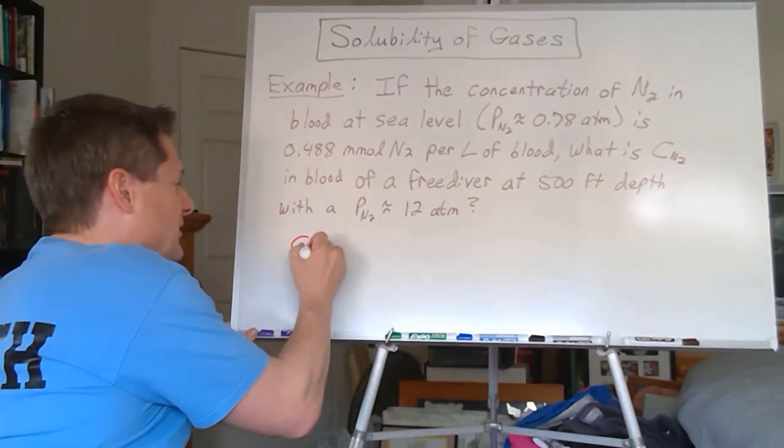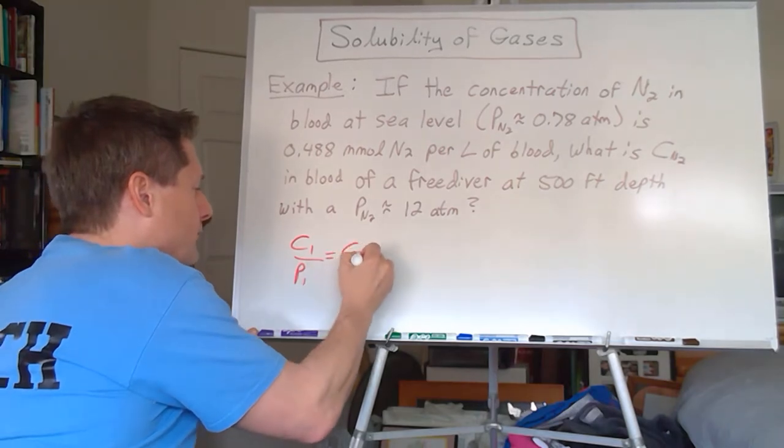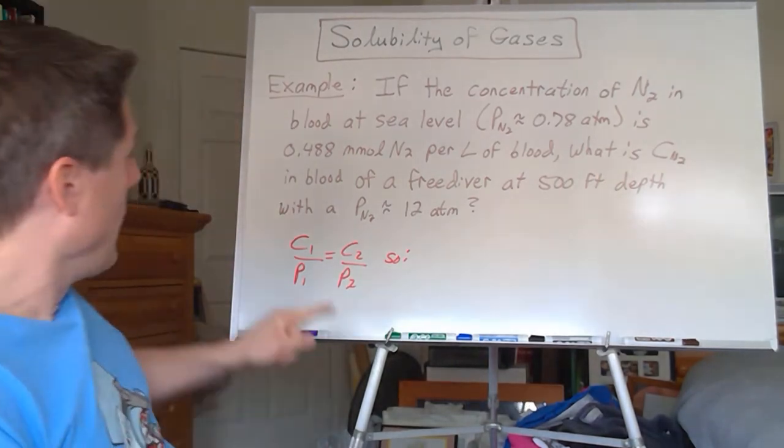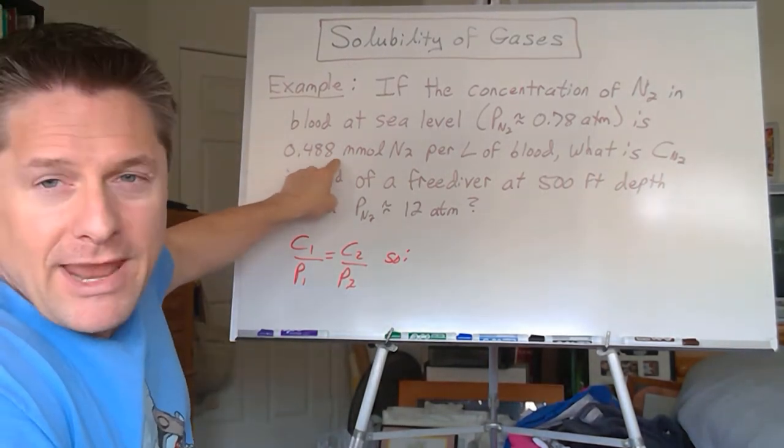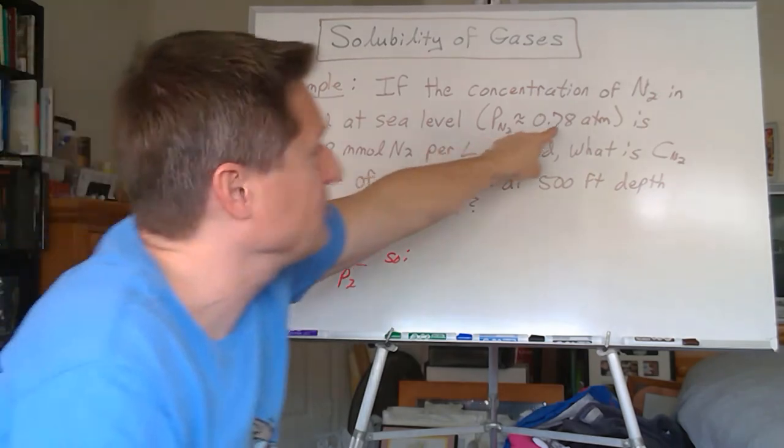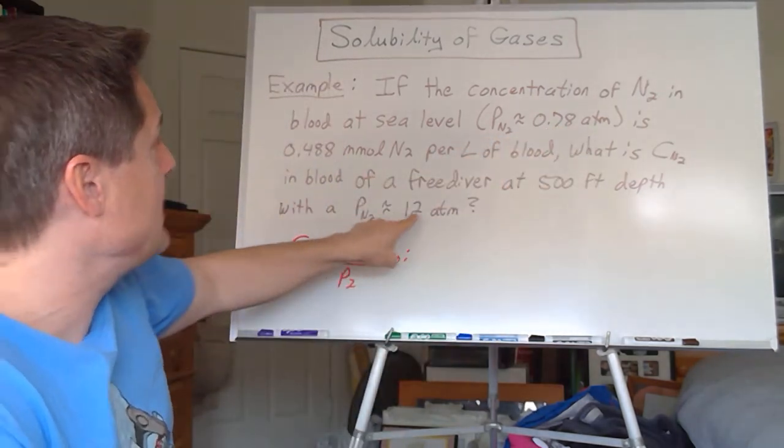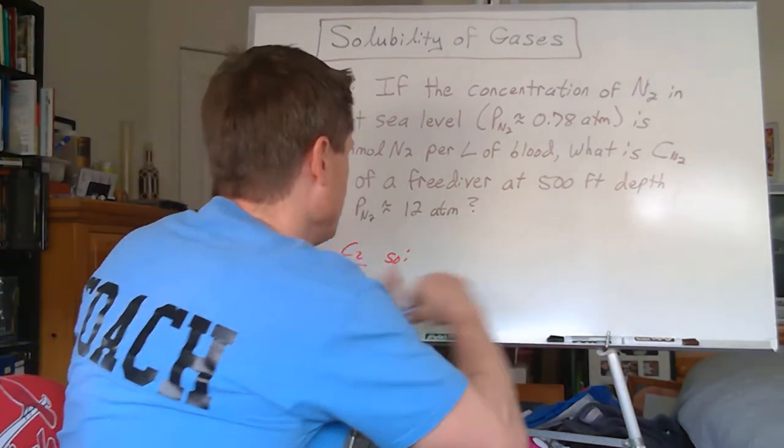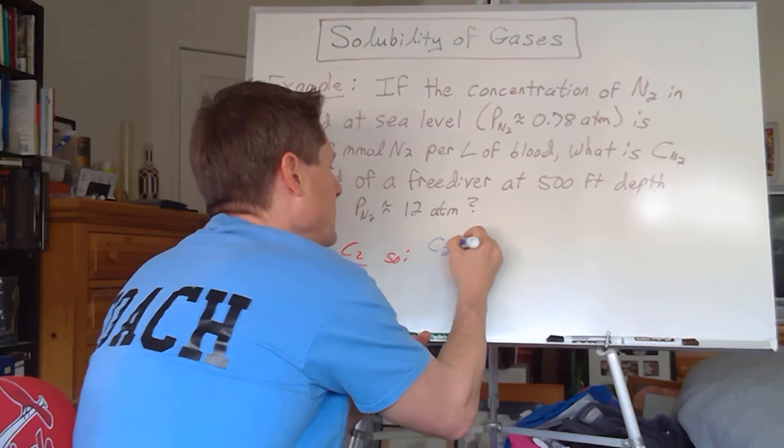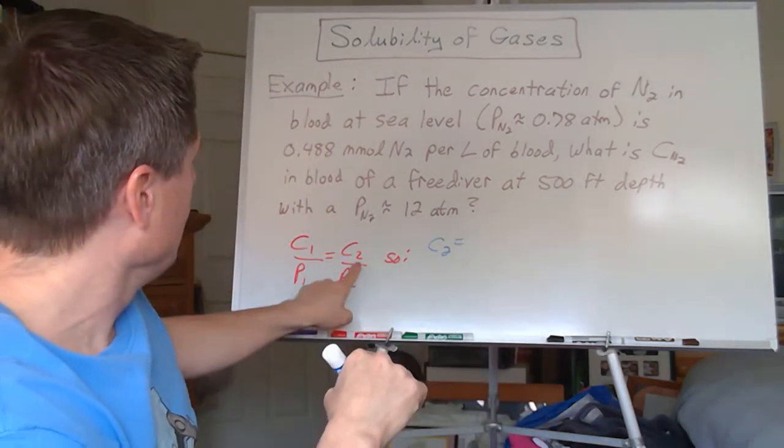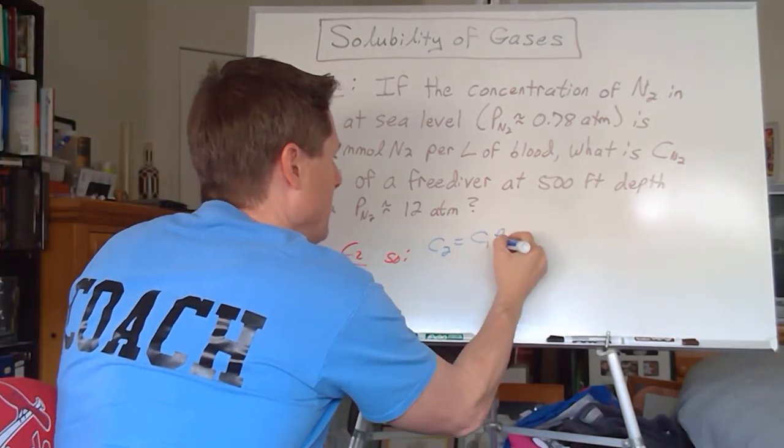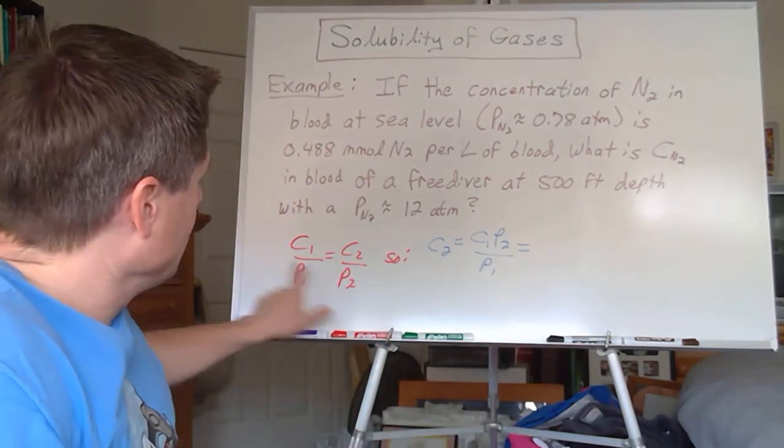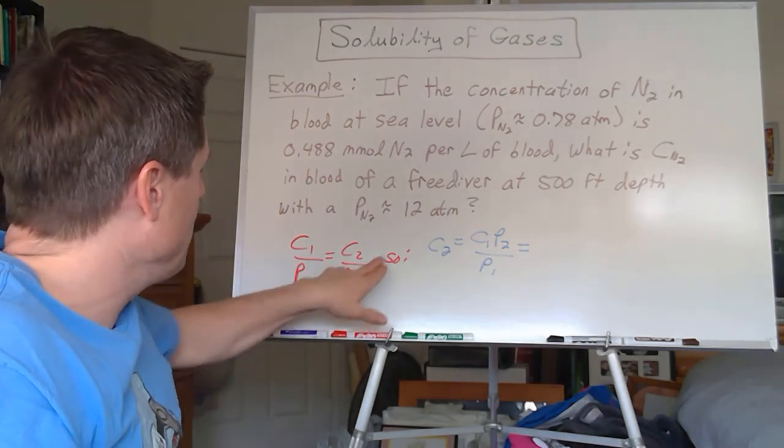Well, we know under changing conditions, C1 over P1 is C2 over P2, correct? Well, we know C1, that's 0.488 millimoles nitrogen per liter of blood. We know P1, which is 0.78 atmospheres. We know P2, which is 12 atmospheres. So let's solve for C2, okay? It shouldn't be so tough. So C2, remember algebra, that'll be C1 times P2 over P1. Did I do my algebra right? Just multiply both sides by P2, cancels out.